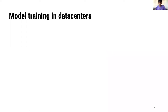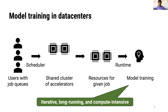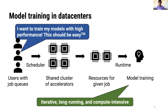In data centers, expensive accelerators typically are part of a shared resource pool. Schedulers then grant resources to different users based on various macro objectives specified by the cluster operator. Given dedicated resources, users can then use runtime frameworks such as PyTorch or TensorFlow in order to execute the training task. For modern deep models, computations are iterative, long-running, and extremely compute intensive. The goal of most users is to train their models with as high performance as possible, leveraging the awesome potential of modern hardware.